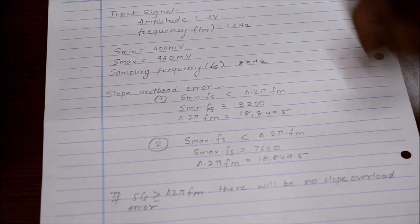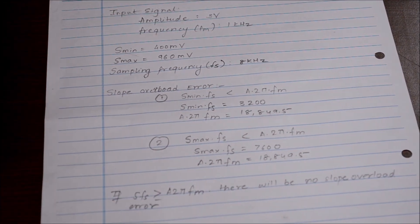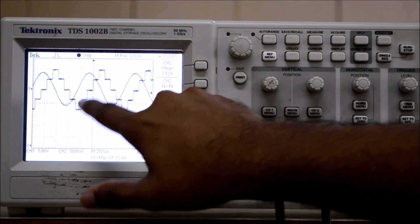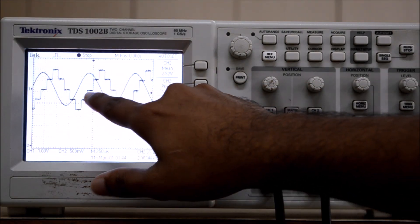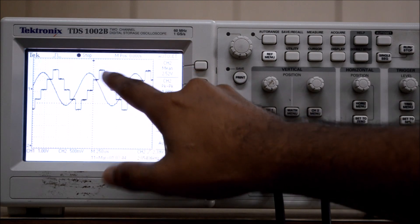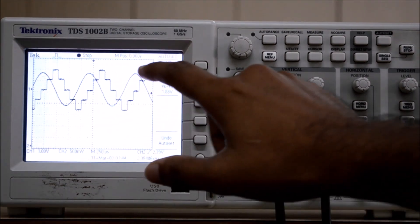The slope overload error can be observed on the DSO as, as we can see over here, the slope of the sine wave and the slope generated by these steps does not match. This is the slope overload error.